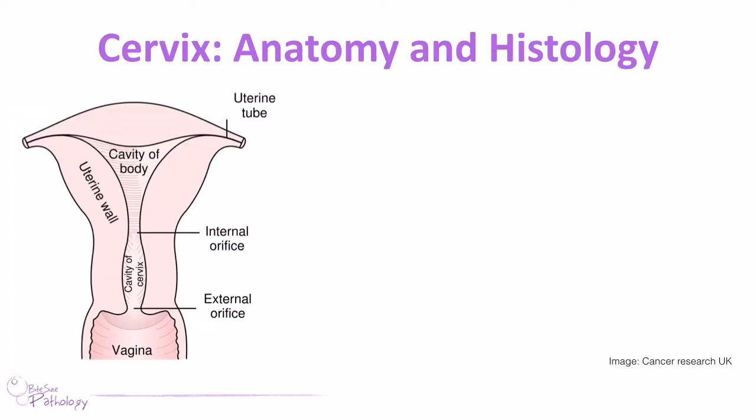To understand the pathology of the cervix you have to go back to your basic anatomy and histology. The cervix is at the inferior aspect of the uterus — it's the bridging portion between the uterus and the vagina. Part of the cervix faces the vagina and we call that the ectocervix, and we have a cervical opening — the external orifice — that faces the vaginal cavity. The inner aspect of the cervix leading up to the uterus we refer to as the endocervix. The ectocervix is lined by stratified squamous epithelium, which is an adaptation to cope with the acidic environment of the vagina.